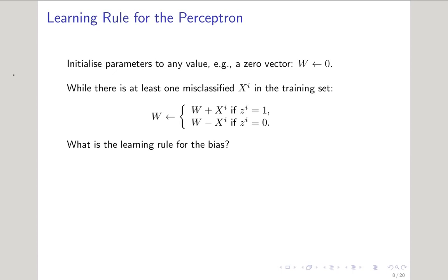That covers the learning rule for the weight vector. But what about the bias? Here you can see a similar learning rule for the bias, but here we are adding or subtracting 1 in a manner similar to before.